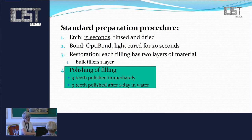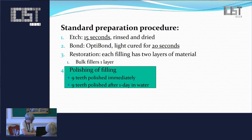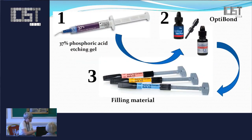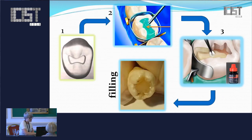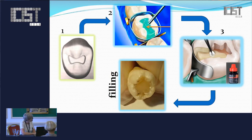In our study each material was placed in layers, except for the bulk-fill material which is placed in one layer per the manufacturer's instructions. Then we polished our fillings — half of the teeth were polished immediately after the filling was done, and the rest were polished after one day of storage in water. The materials used included the etching gel, bonding material, and syringes with the composites. You can see the box-shaped class one cavity, application of the etching gel, bond system, and the finished filling.